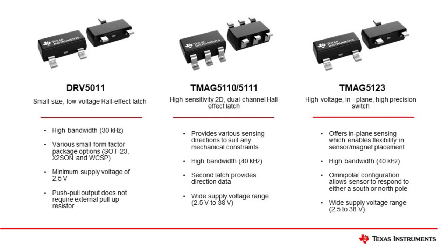The magnetic sensing portfolio provides many options when designing for a magnetic flow meter. The DRV5011 is a small form factor Hall effect latch that boasts a bandwidth of 30kHz. This device enables compact designs by providing a push-pull output that does not require an external pull-up resistor while operating from a low voltage 2.5V supply.